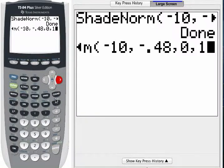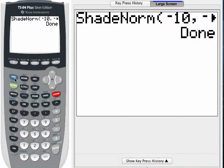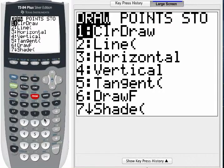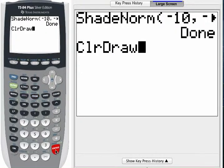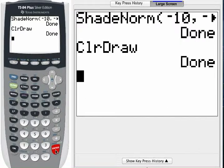So remember, after you do a shade norm command from the home screen, it's important that you press second program so that you go to the drawing options, clear the drawing, bring the command to the home screen, and press enter. It's important that you clear the drawing so that you are ready to do your next shade norm command. Hope this has been a helpful review.